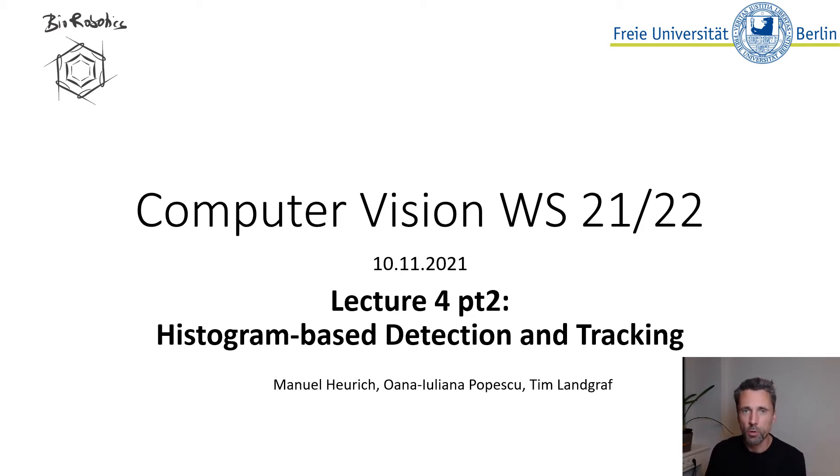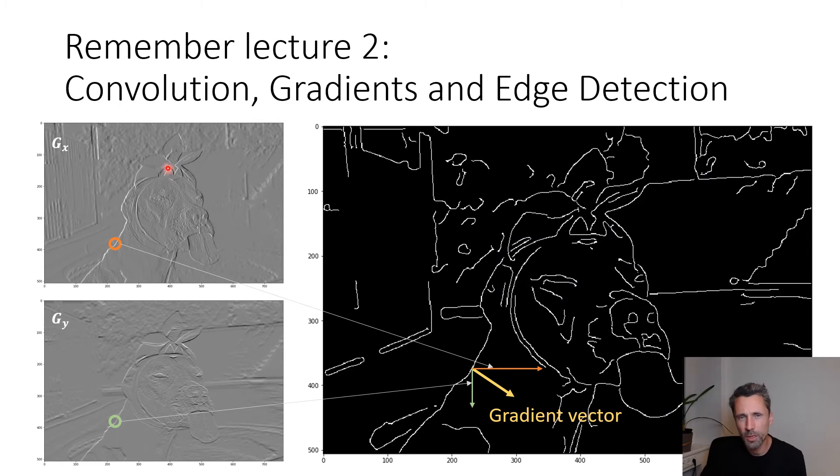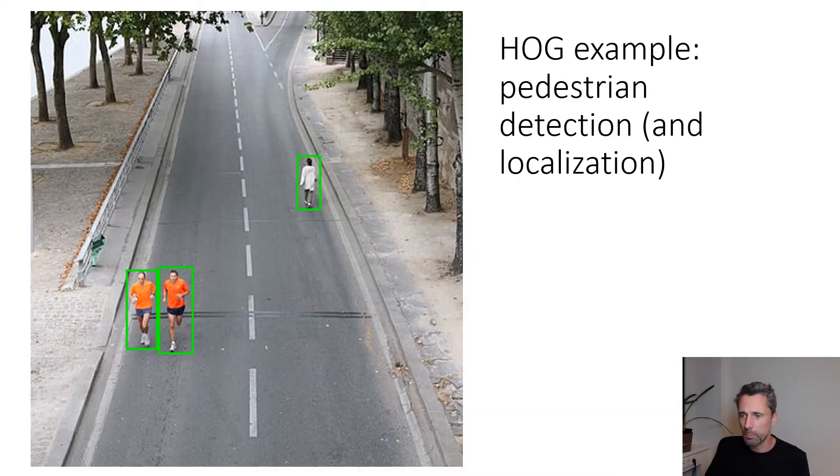Welcome everyone, this is part two of lecture four on histogram-based detection and tracking algorithms. This part concerns a paper called Histograms of Oriented Gradients, published in 2005 by Dalal and Triggs. This is one of those papers you should know. Here we will use concepts shown in lecture two - you need to understand what convolution does and how to compute image gradients. If you don't, go back to lecture two. Today we'll look at the problem of detecting pedestrians in an image.